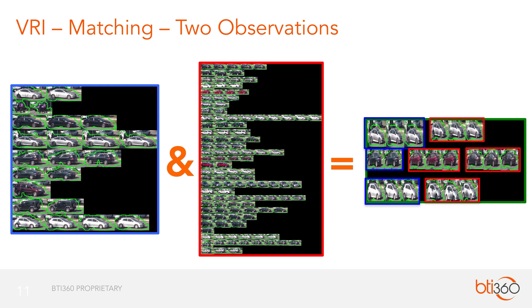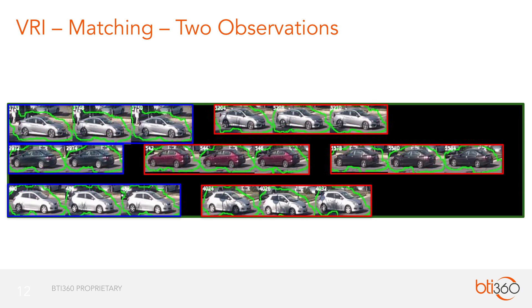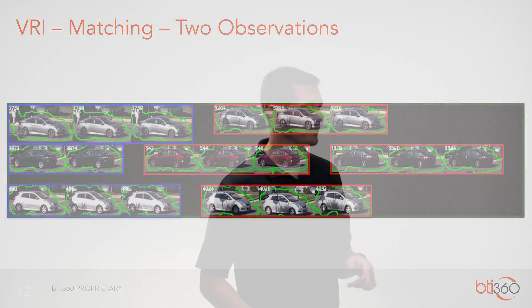Then we get into matching. We have observation one bounded in blue and observation two bounded in red, and we want to find vehicles observed in both. Zooming into the results, we have observation one's silver Civic matching a vehicle in observation two. One vehicle from observation one matched two vehicles from observation two — one of them is actually red, so we know the matcher can be improved. But looking closely, it's actually the same model car in a different color, so it's not a bad match.